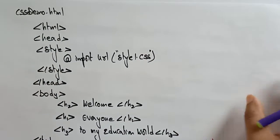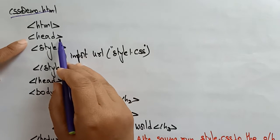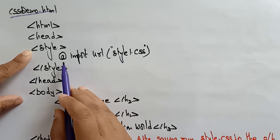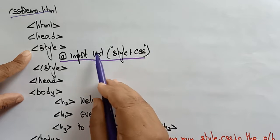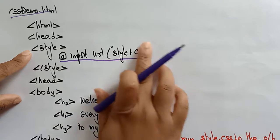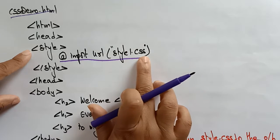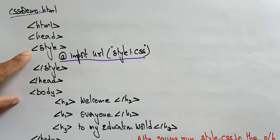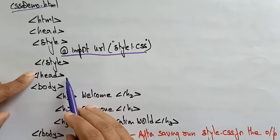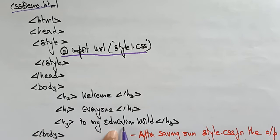Now let's see how this import will work. I am taking an HTML file — CSS demo.html. Now I am going to import style1.css. In the HTML head, within the style tag, I write @import and the URL is style1.css. This is the file where I have written everything — the style, decoration, text alignment — everything in style1.css. I am importing that style1.css. Then close the style tag, head tag, and in the body, H2 is 'Welcome', H1 is 'Everyone', and H3 is 'To My Education World'.